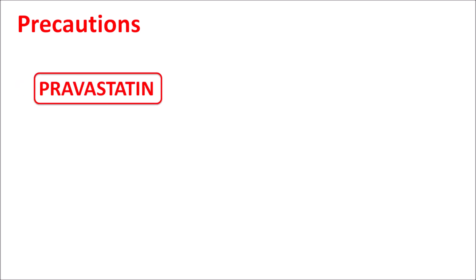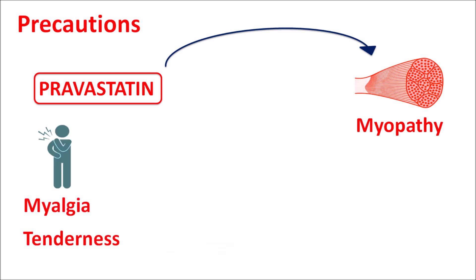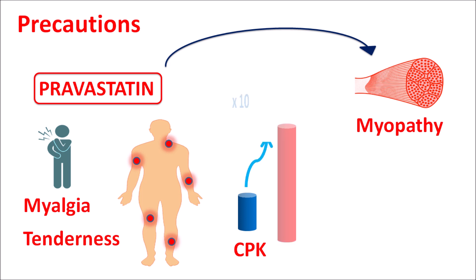Now let us see the precautions of pravastatin. Just like other statins, pravastatin can produce effects on muscle and cause myopathy. Patients can experience increased muscle pain that may diffuse to different parts of the body. This drug can also increase CPK (creatine phosphokinase) levels, which again indicates myopathy. CPK levels can be increased up to 10 times by use of pravastatin, in which case the drug should be stopped, as these conditions indicate severe myopathy.